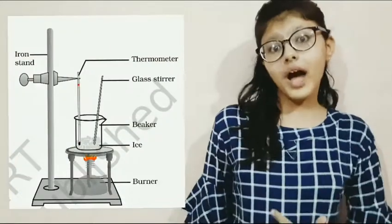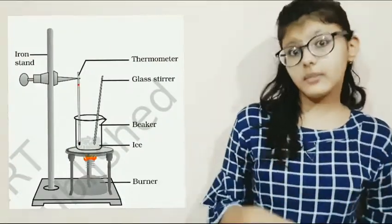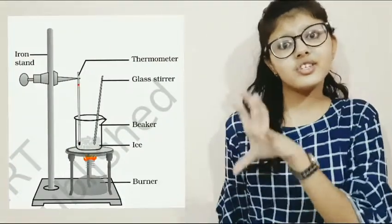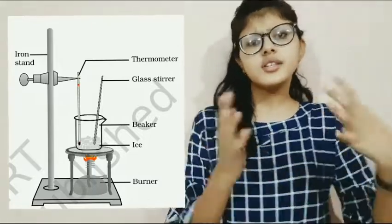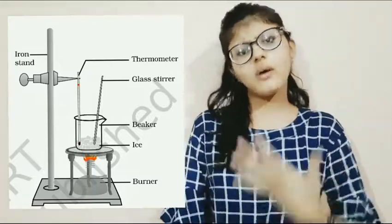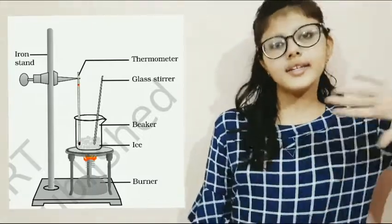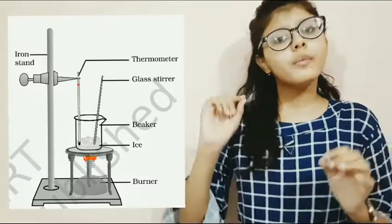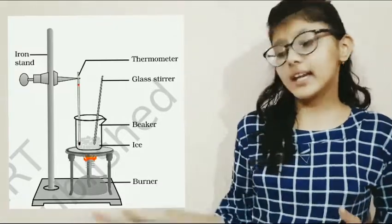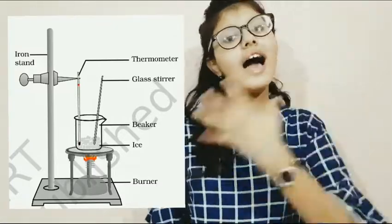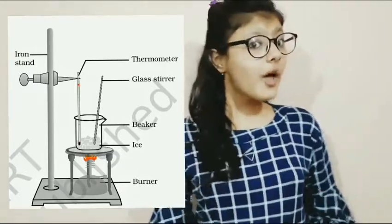In order to learn this, we are going to perform an activity. Take some ice — what is called dry ice — in a beaker, and dip a thermometer into it. What you will observe is that the temperature is going to be around zero degrees or somewhat in the negative range.